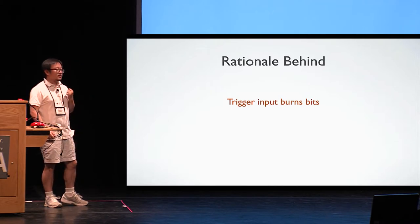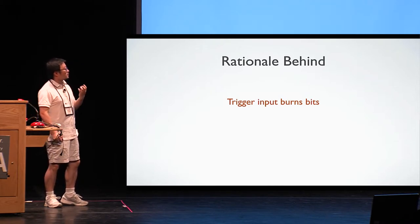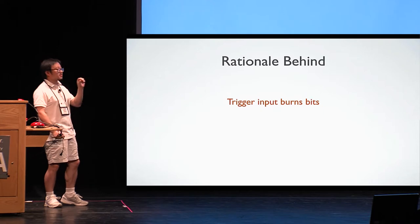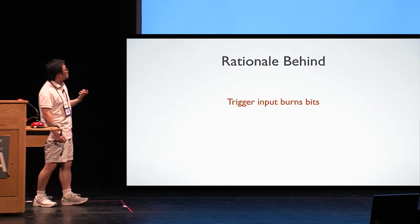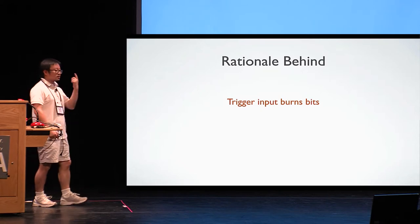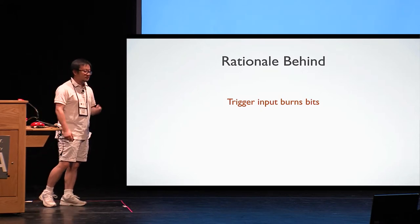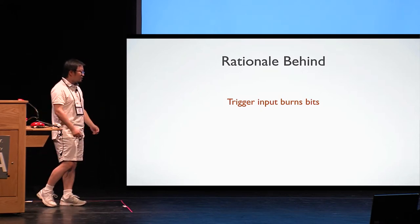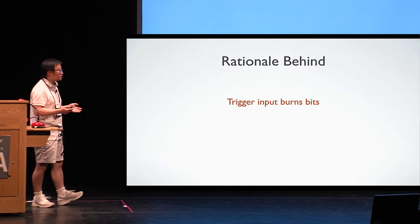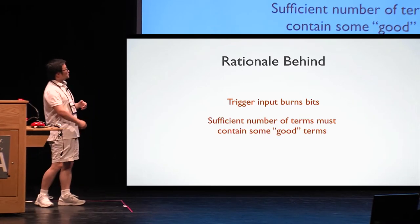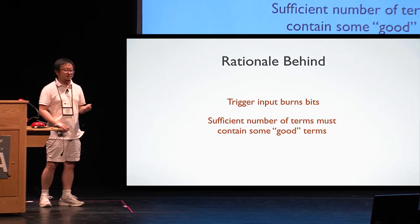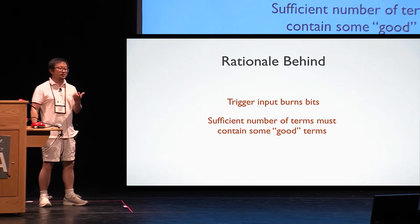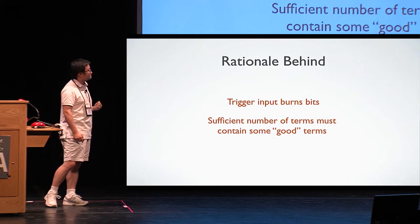This idea might sound a little bit silly from the beginning, but actually it does have some rationale behind. Because in order for the attacker to influence any value of any term, it has to pass some trigger input in, right? Trigger input means information. You have to burn the original bits. At least one trigger needs to burn one bit. So if the total number of bits is n, that means the attacker can at most influence n terms. So if we're mixing enough times, it seems there must exist some term that is never influenced by the malicious input. That's the hope.